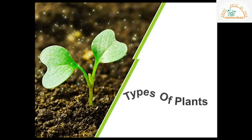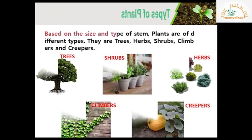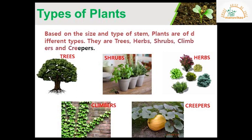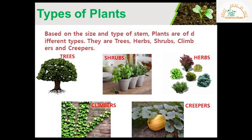We have learned the parts and functions of the plant. Now we will learn about the types of plants around us. Children, we all see beautiful green plants around us. Did you ever observe that they are of different types and sizes — some are very small and some are very big? So let us learn about the types of plants today.